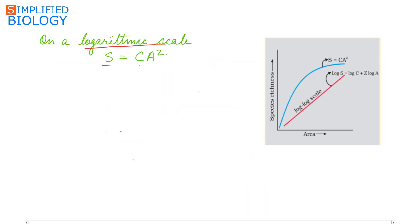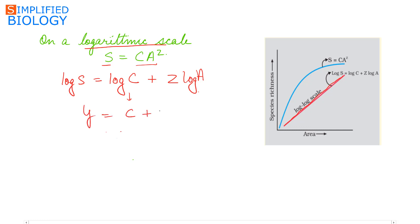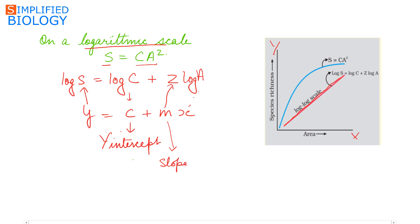On a logarithmic scale, the equation S = CA^z becomes: log S = log C + z·log A. This is always a straight line, analogous to the equation of a straight line y = c + mx, where y (the y-axis) represents log S (species richness), c is the constant or y-intercept, m equals z (the slope), and x (the x-axis) represents log A (the area).